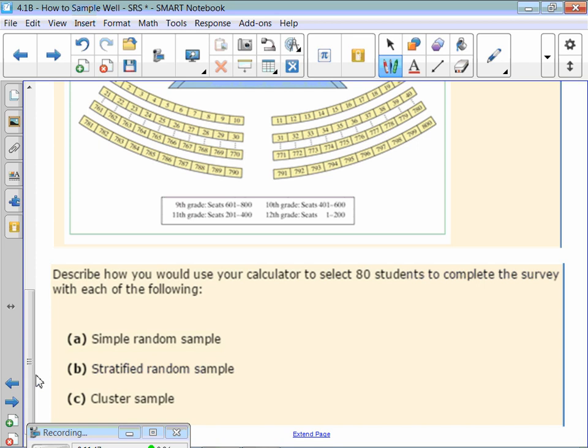First thing, everybody's already in a seat so they're already labeled 1 to 800. Then we would just pull out our calculator and we would do random integer from 1 to 800, 80 times. Then you would go distribute your survey amongst all those numbers. That would take a while. You'd be walking around the auditorium looking for seat 52 and whatever. That's just a simple random sample.